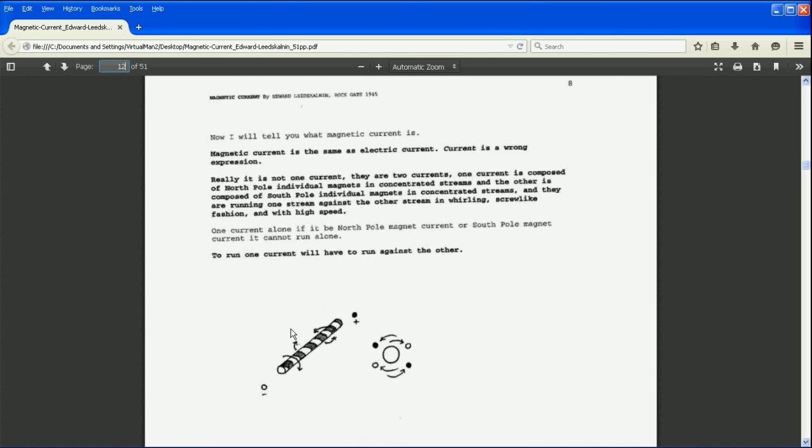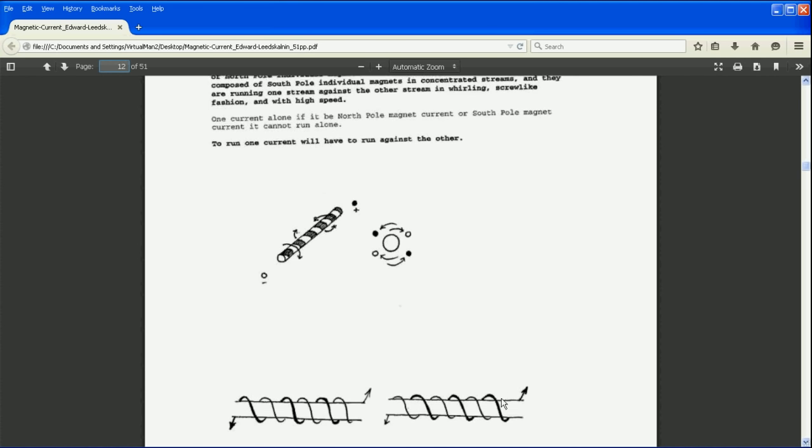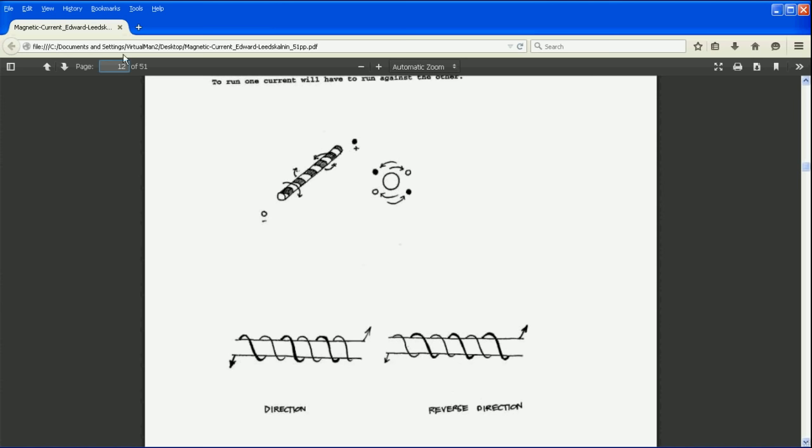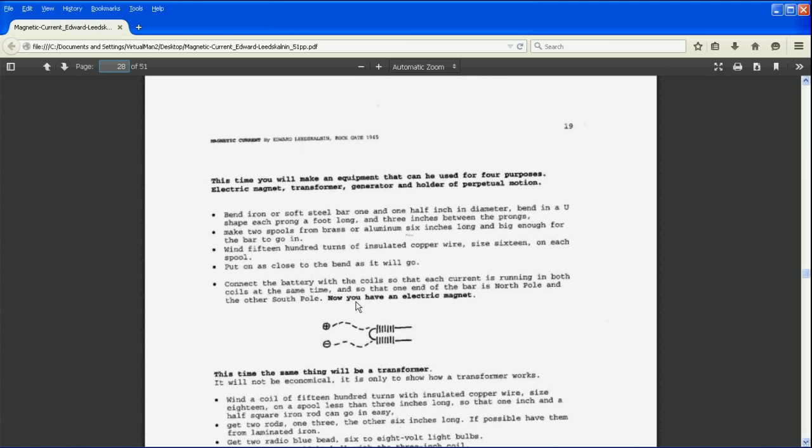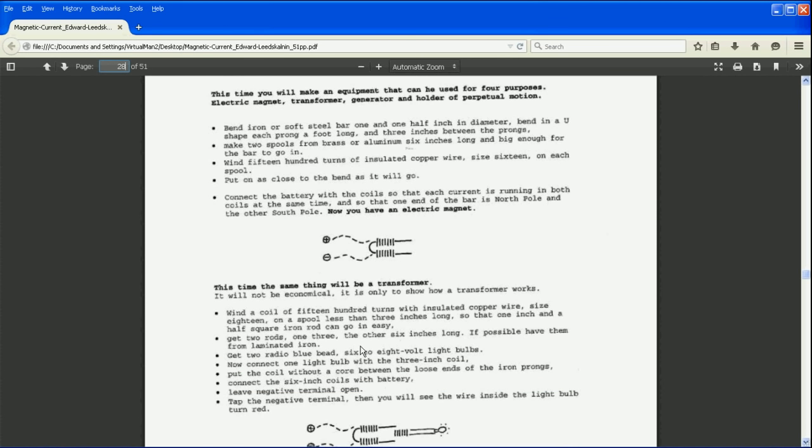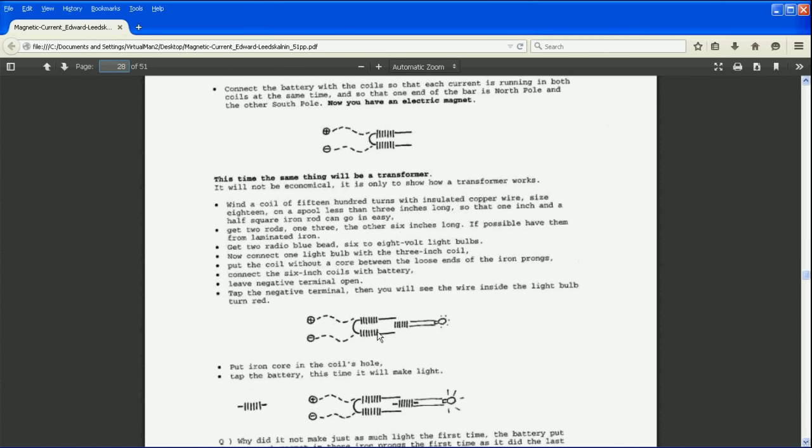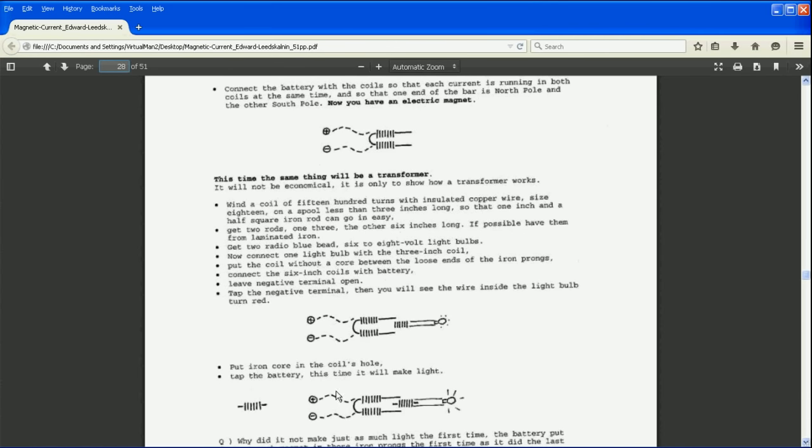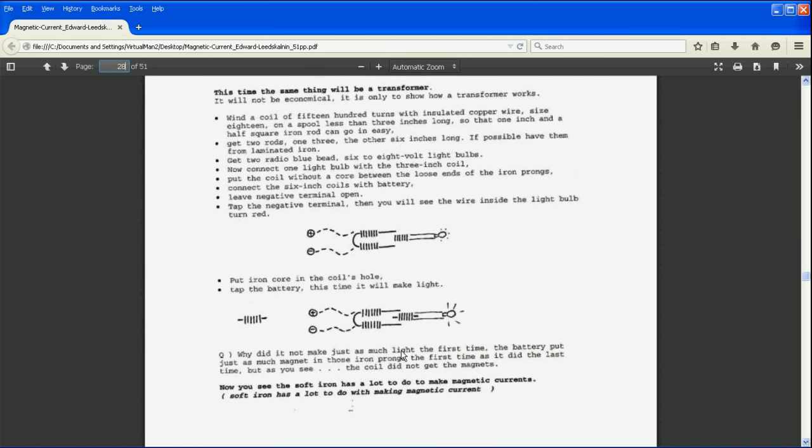Let's jump to page 28. Here is his perpetual motion holder, I'm sure you guys will recognize this. He is describing how to use it as a transformer to light a light bulb. This perpetual motion holder has many different uses, not just holding an iron bar - that was just one of the uses.